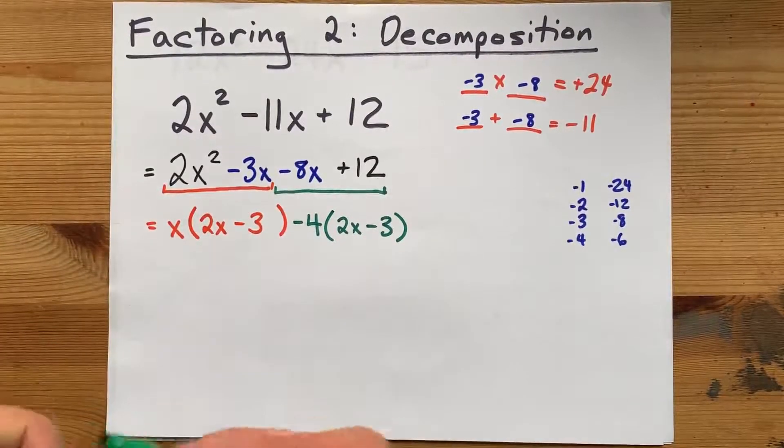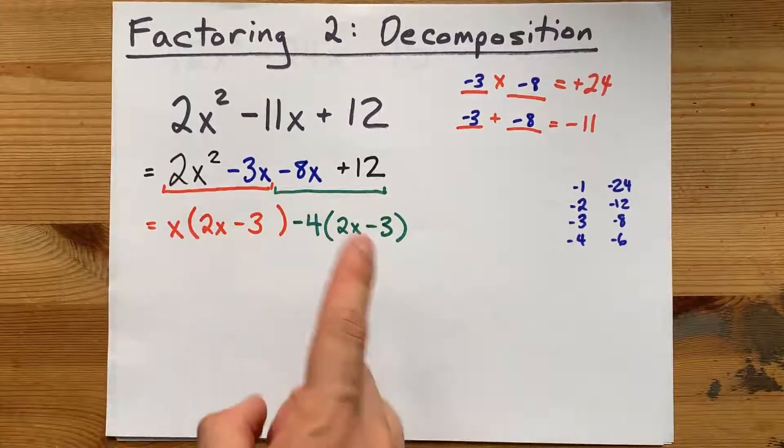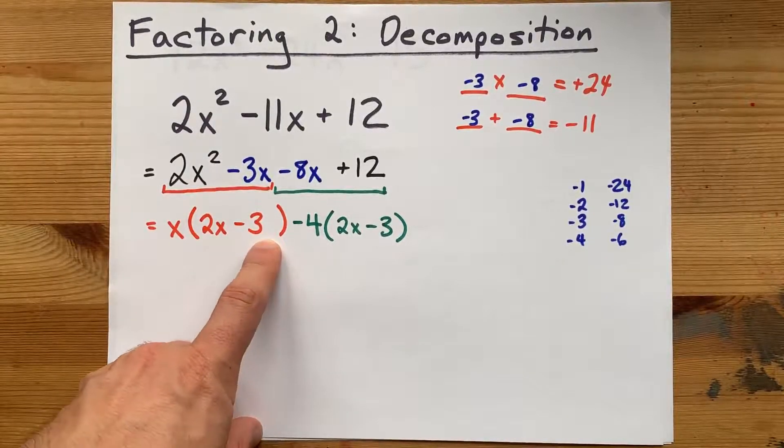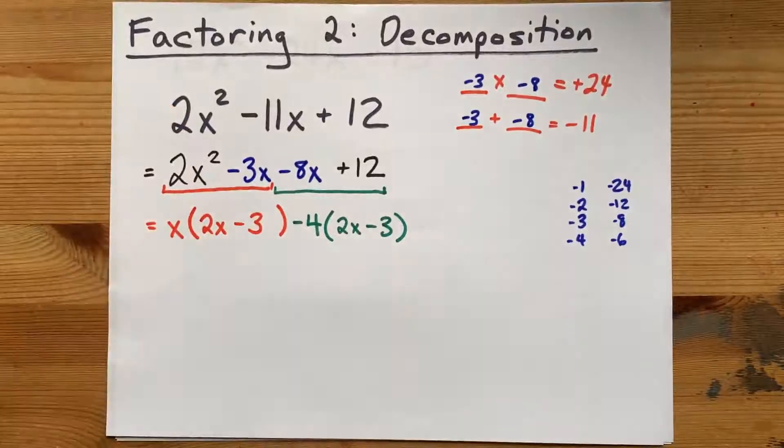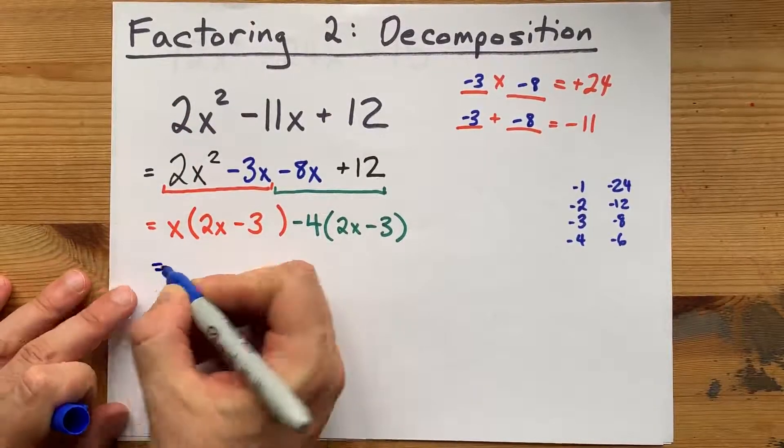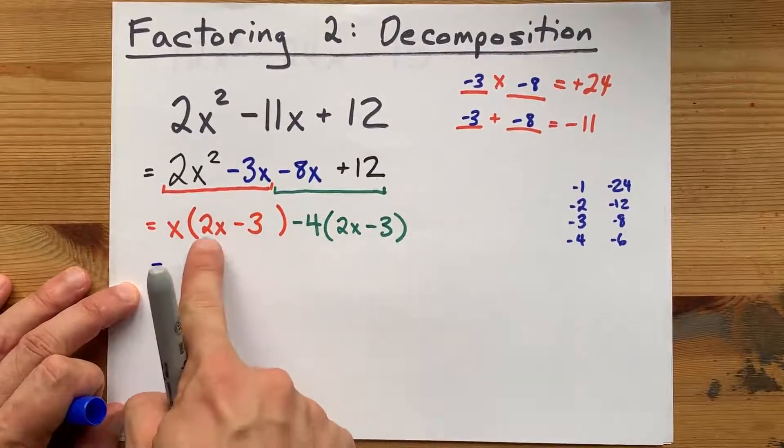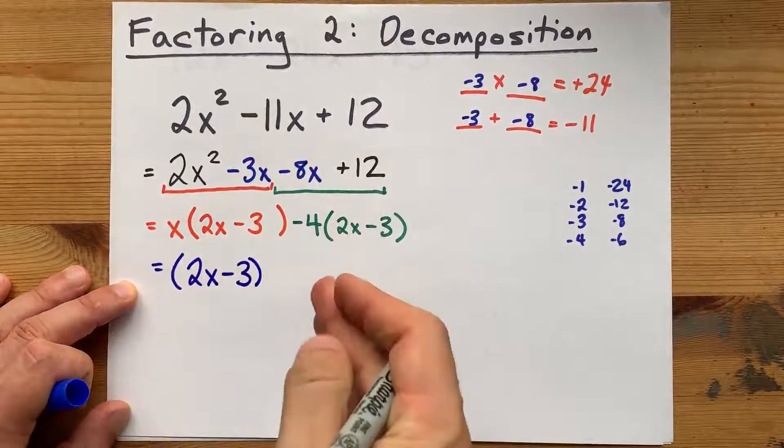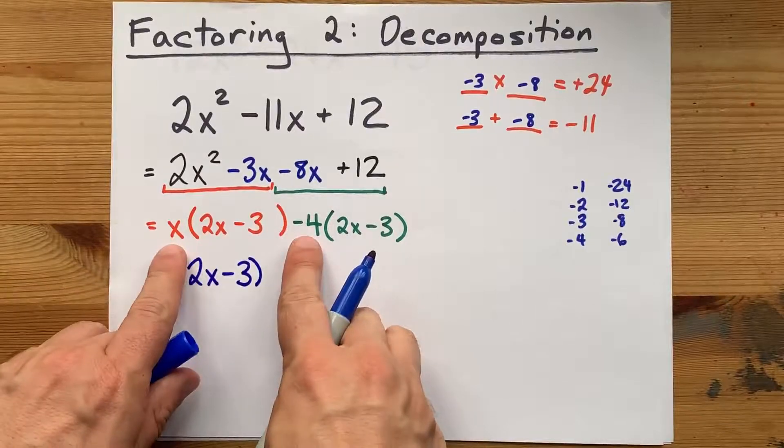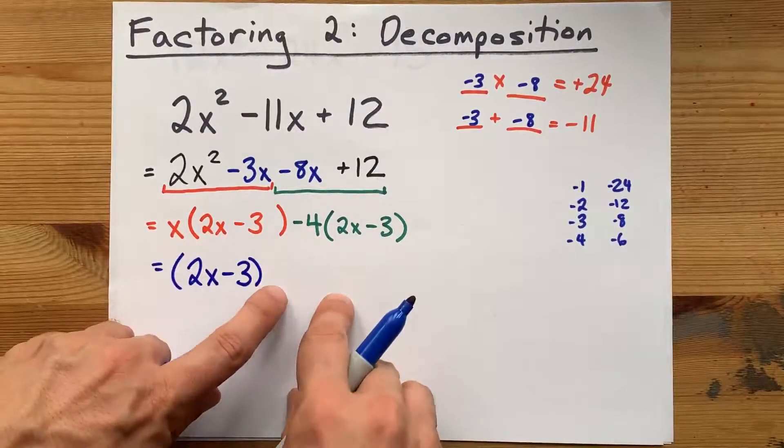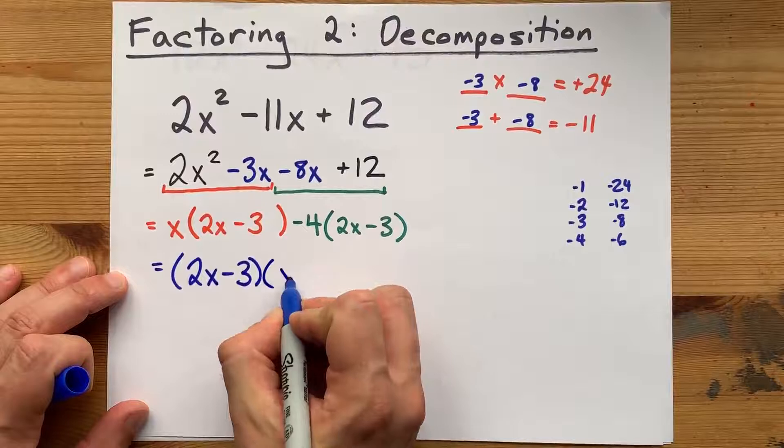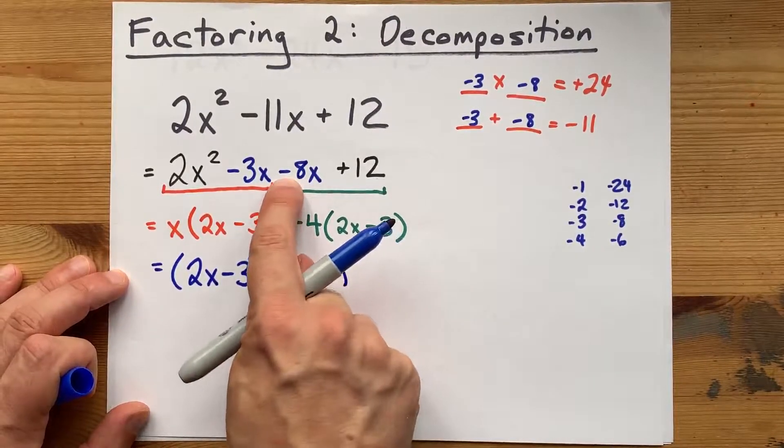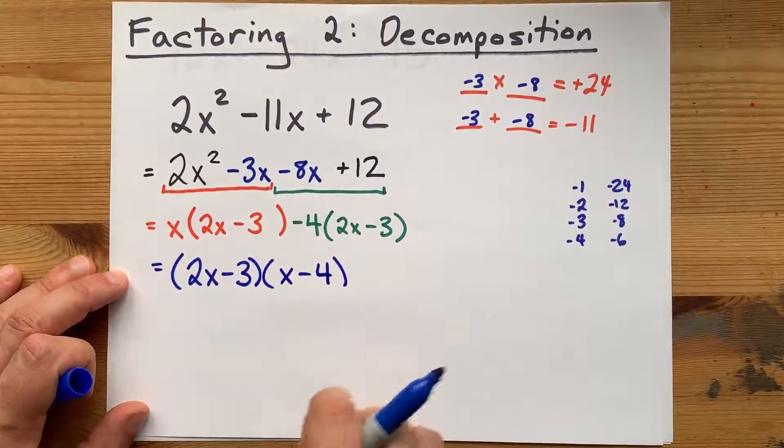Now, at this point, you'll know you've done it right. If the brackets match 2x minus 3 in this bracket, 2x minus 3 in this bracket. Very nice. Your final answer here is going to be that same bracket copied out once. And then, the bits that are not in brackets into another set. x and minus 4. That's why that sign was important to copy from here. It ends up in one of the brackets.